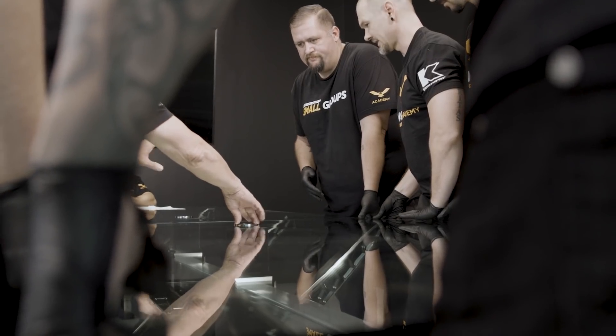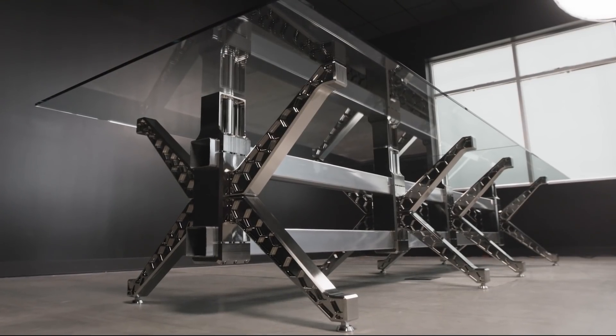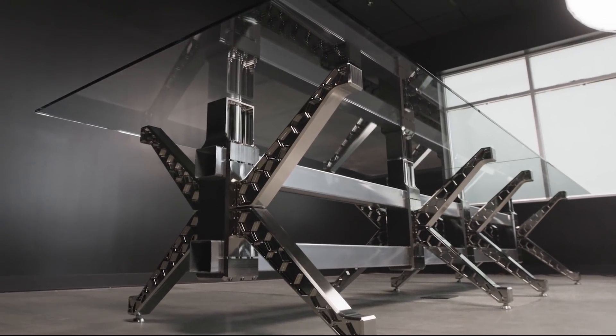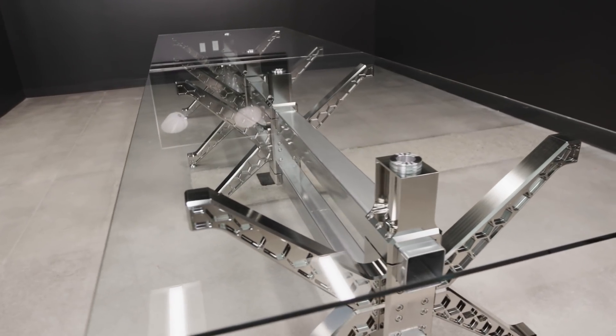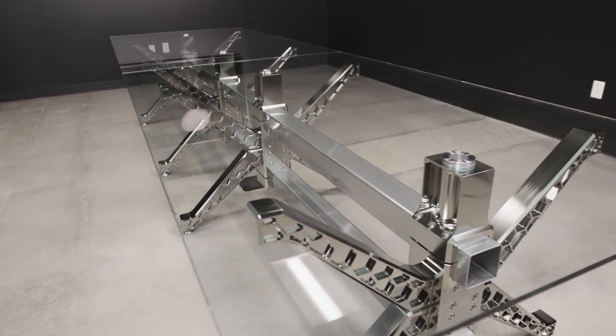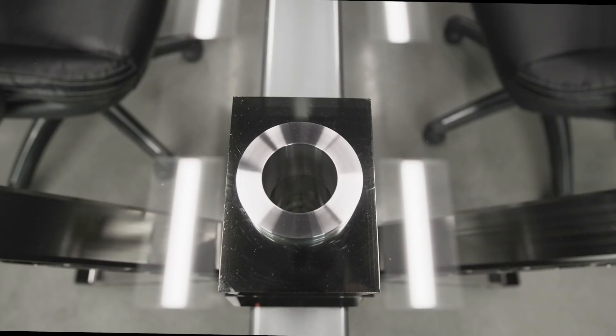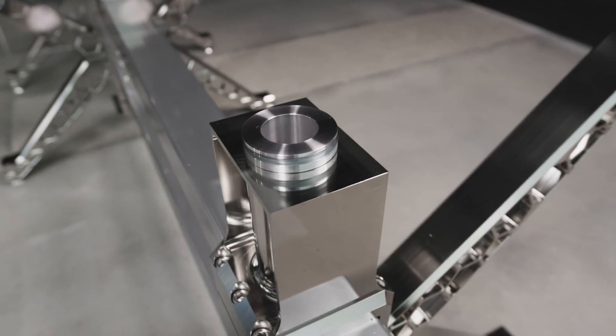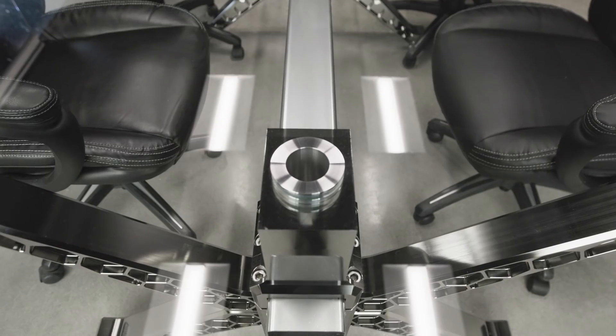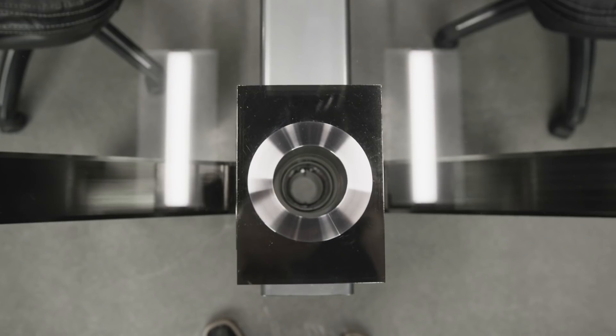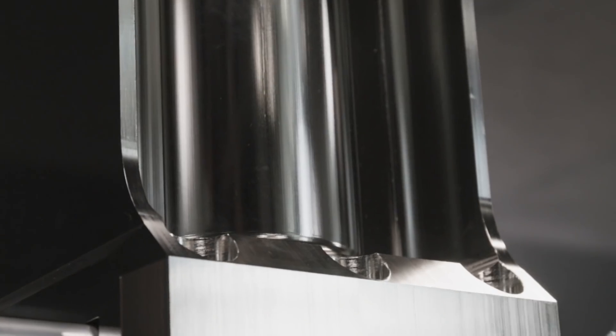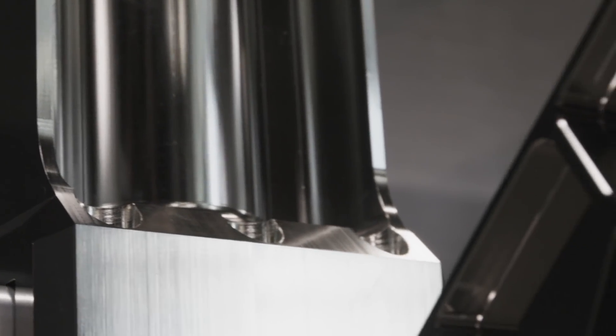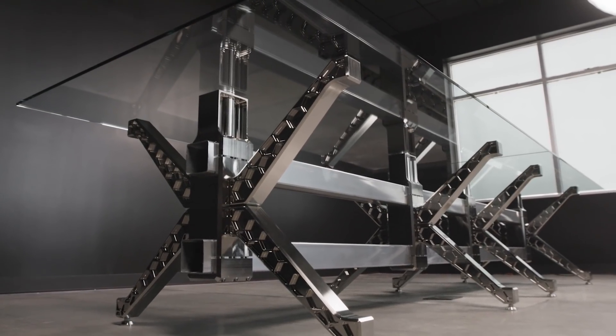Some of the things that we would talk about is just understanding the different types of anodize. Etching the part—that's an acid etch that you do that prepares the material to get anodized. There's chem film or alodyne as it's called, and that's a very light finish, like just a few tenths that basically goes and protects the material.